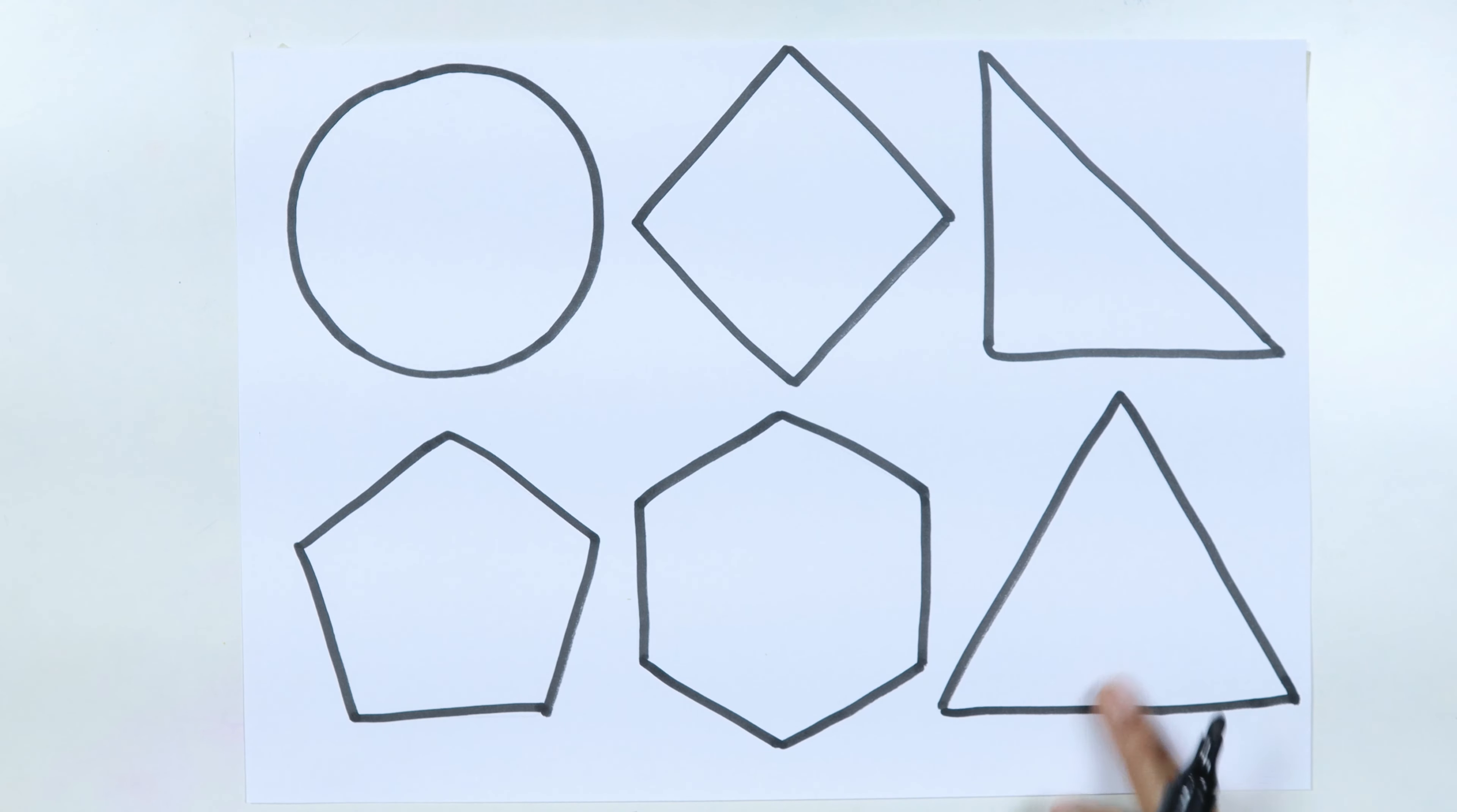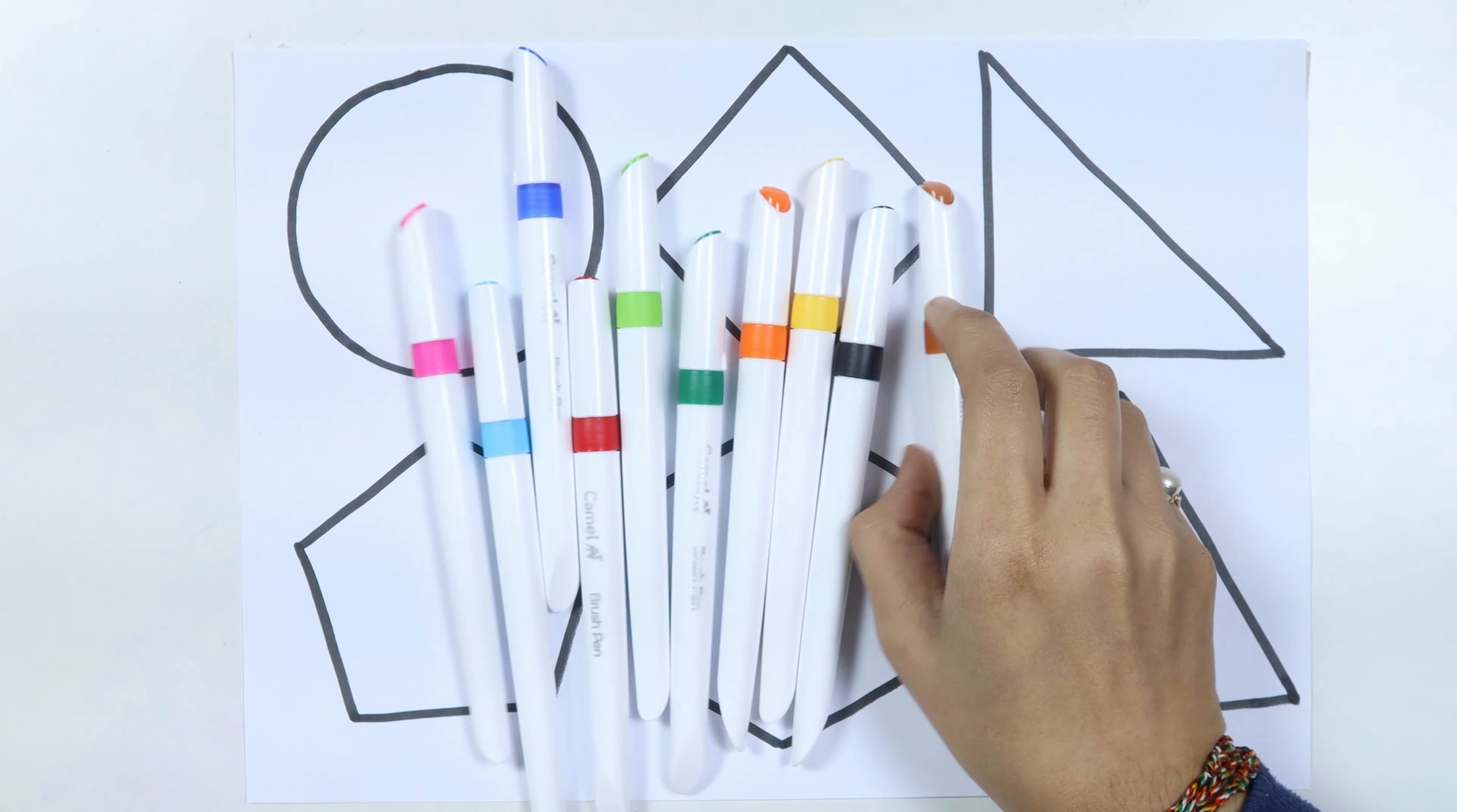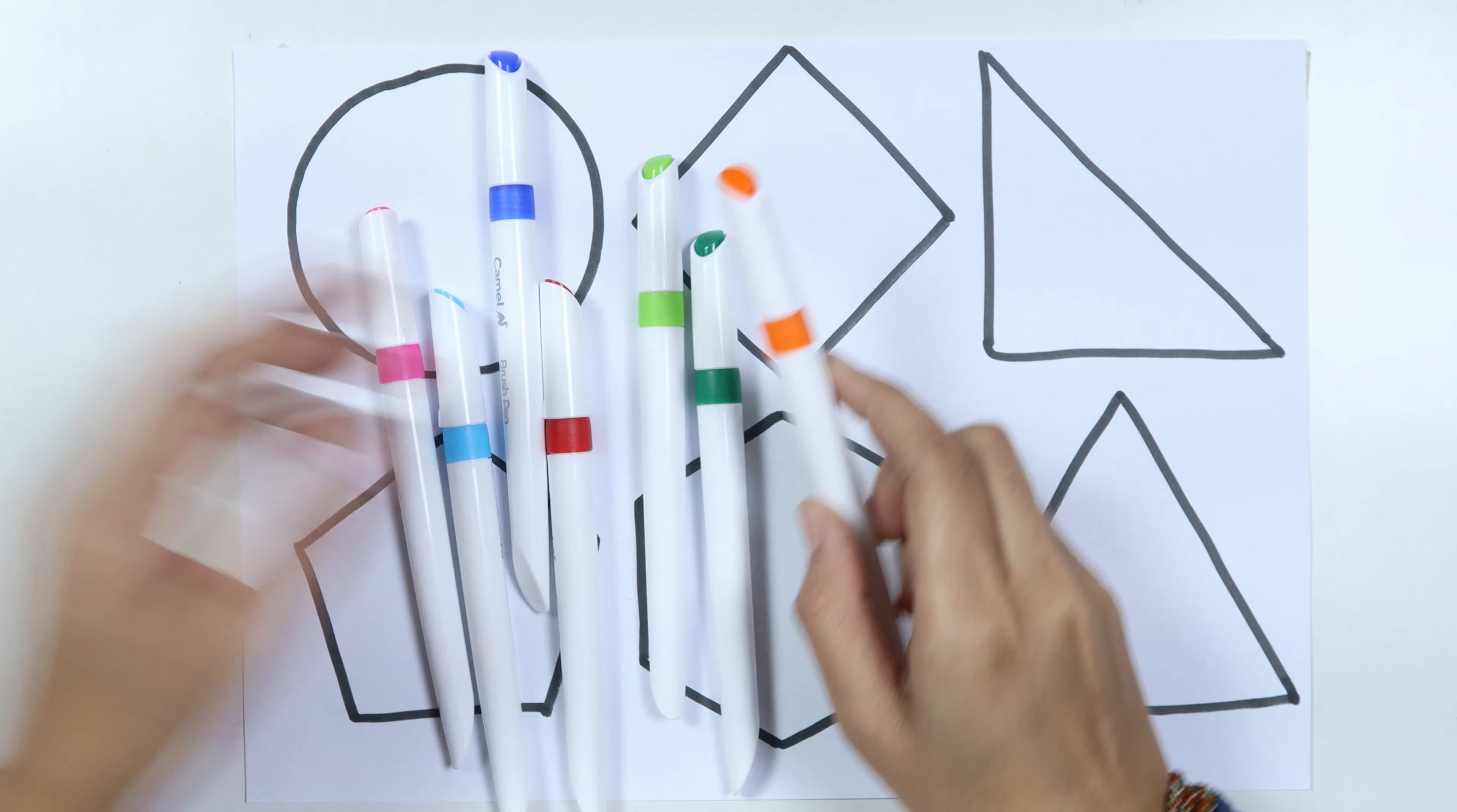Triangle. Let's learn some colors: purple color, brown color, black color, yellow color, orange color.